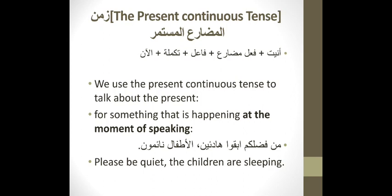So, last lecture we discussed translating the simple present tense, and we said that in order to choose the right tense in English when you translate from Arabic, you need to know the uses of each tense. The simple present tense is used to talk about something that's true in the present, something that's always true, something that is repeated again and again like habits, and it can also be used to refer to the future when the future is fixed.